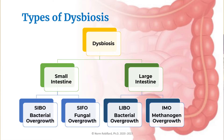In the small intestine, we have SIBO, or small intestinal bacterial overgrowth, and SIFO for small intestinal fungal overgrowth. In the large intestine, there is LIBO for large intestinal bacterial overgrowth, and IMO for intestinal methanogen overgrowth.